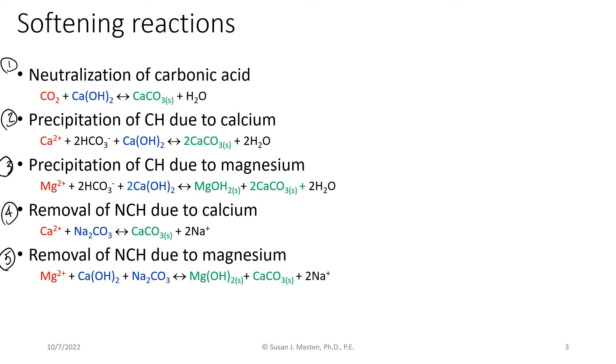Also need to think about, we said in the notes, that 40 milligrams per liter was our cutoff where magnesium became problematic. We're at 25 milligrams per liter. Both of those are as calcium carbonate. So think about, do you need to remove magnesium, or do we only need to worry about neutralizing the carbonic acid, precipitating the carbonate hardness due to calcium, and the non-carbonate hardness also due to calcium?